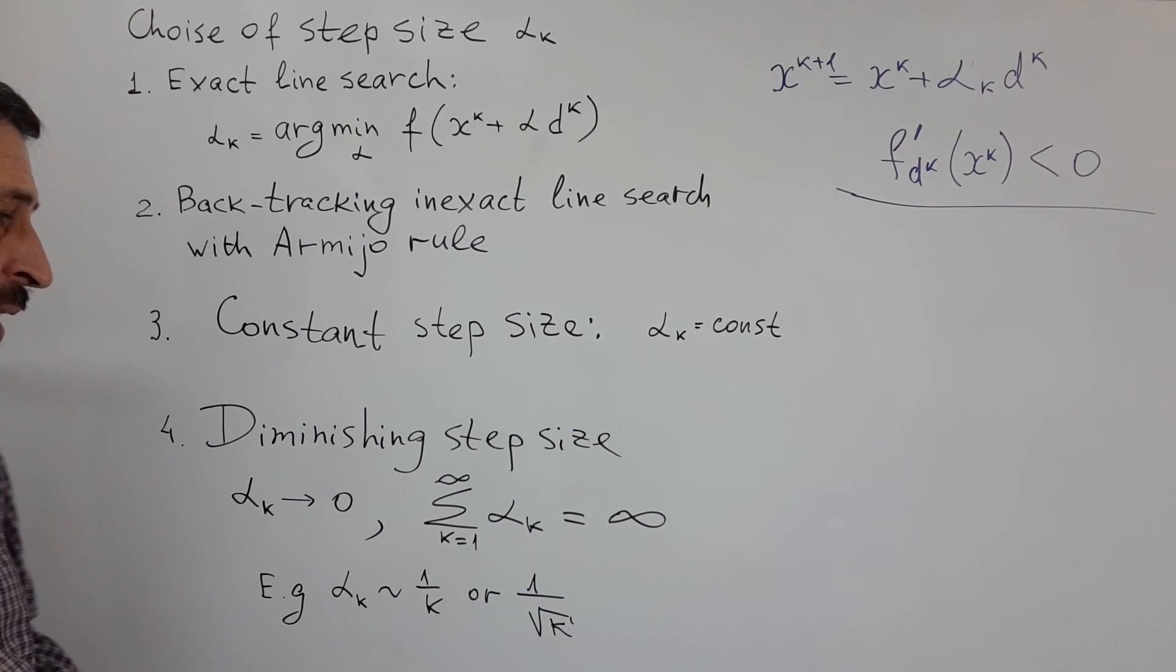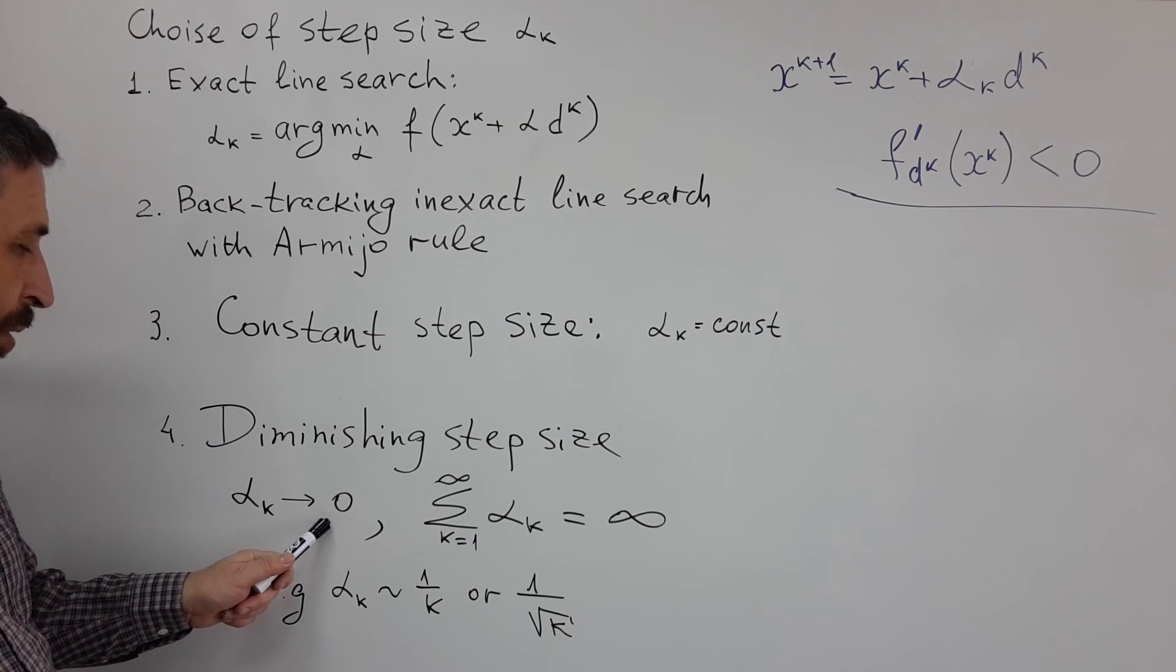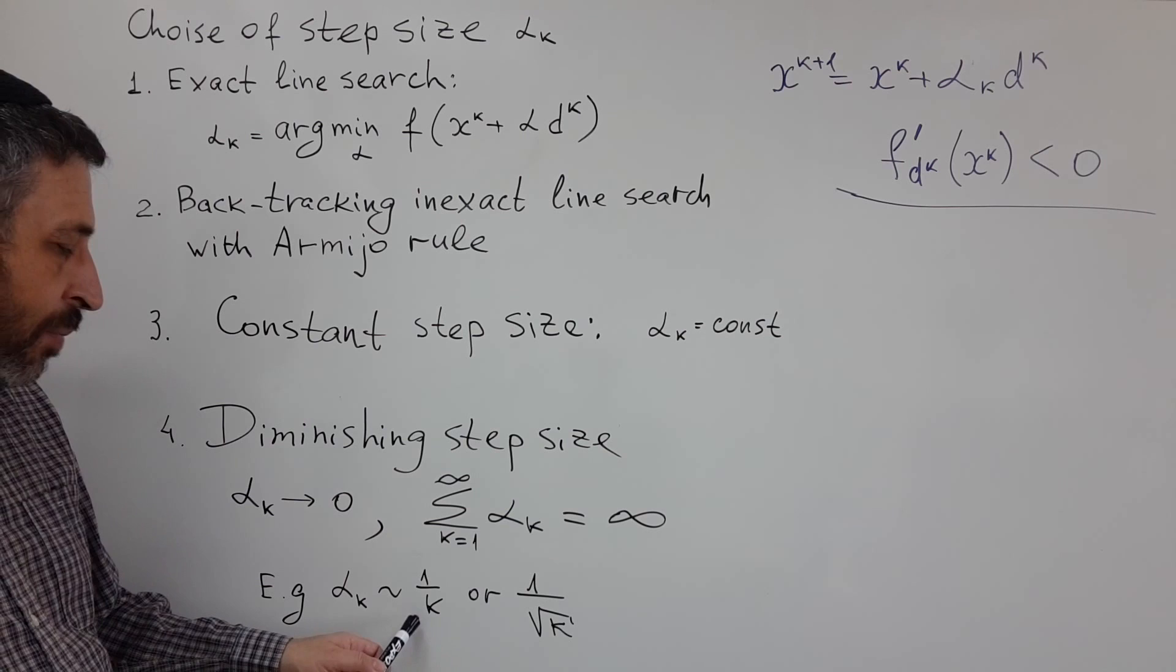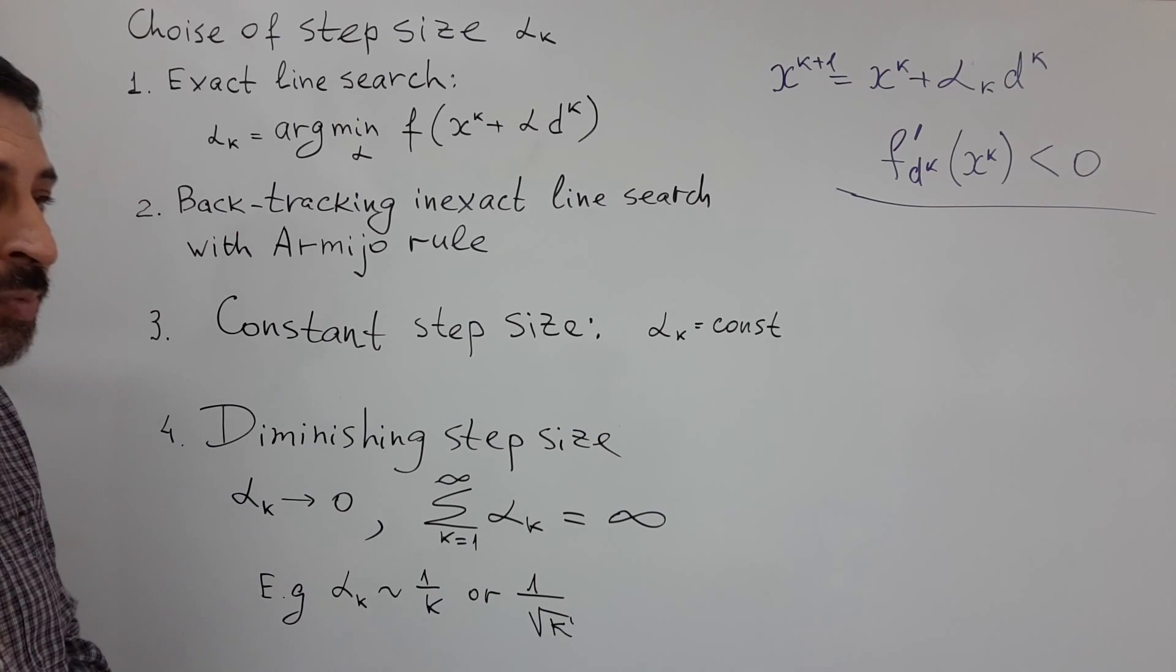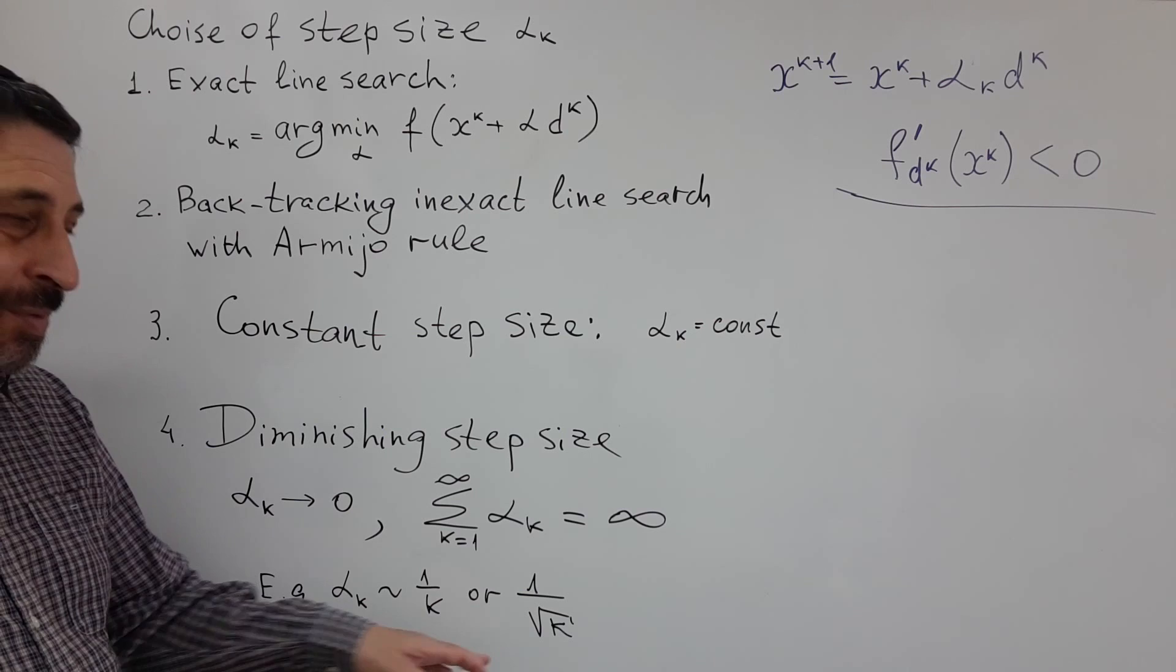And in some situations we know from analytical structure of the problem that it will converge with small enough step size. In more general situations we can choose so-called diminishing step size. We build sequence of alpha k step sizes which go to zero but their sum should go to infinity. For example, alpha k may be proportional to one over k or one over square root of k. And such options are popular in stochastic optimization which we may learn later in this course.